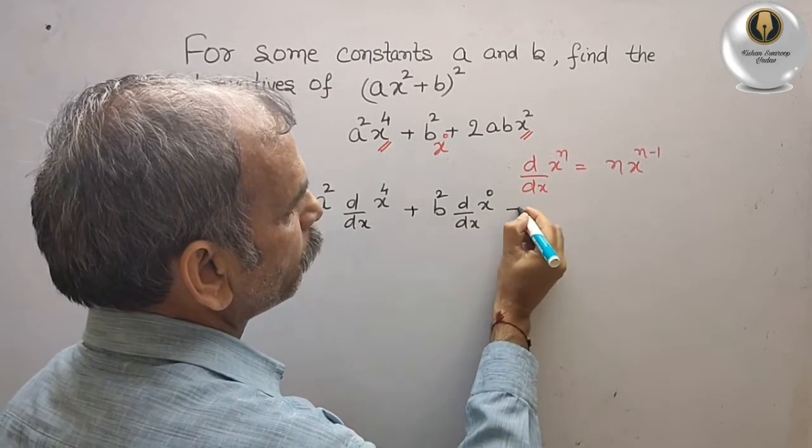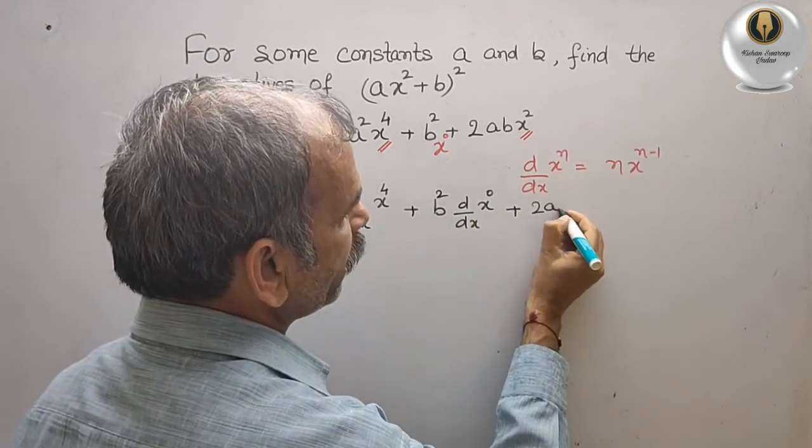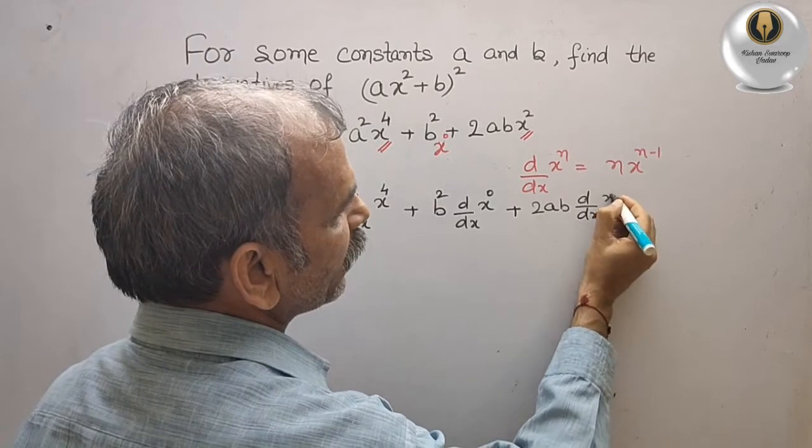Plus, now 2ab is constant. We will write that: 2ab and d/dx, we will get here x².